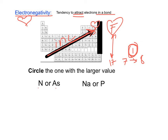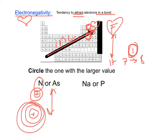Circle the one with a larger electronegativity value — nitrogen or arsenic. They are in the same family, and nitrogen is going to end up having greater electronegativity. Easy way: it's close to fluorine. Using effective nuclear charge and the shielding effect, nitrogen is not as shielded as arsenic. Arsenic is on the fourth energy level, so its positive charge is buried under four energy levels, making it harder to attract an electron. Nitrogen is only on two energy levels, so the nucleus is not as shielded.